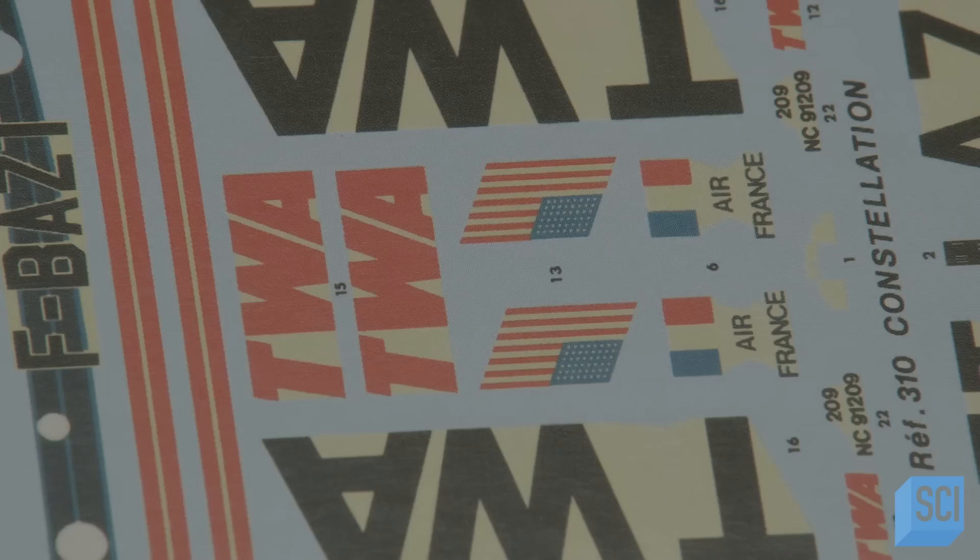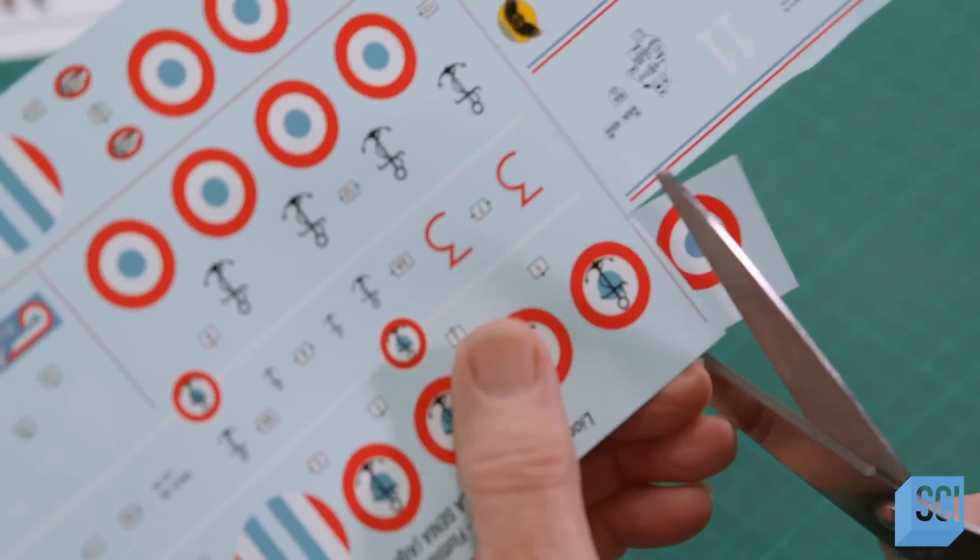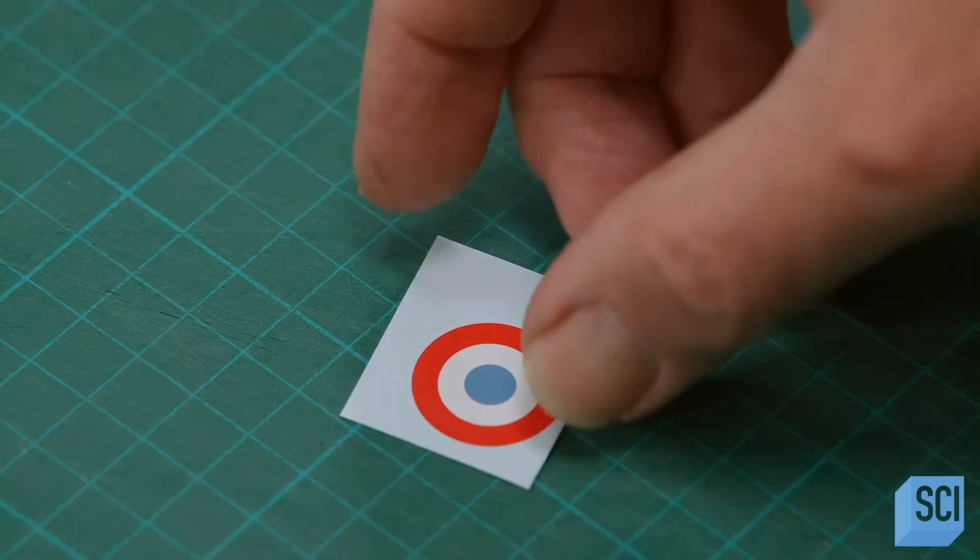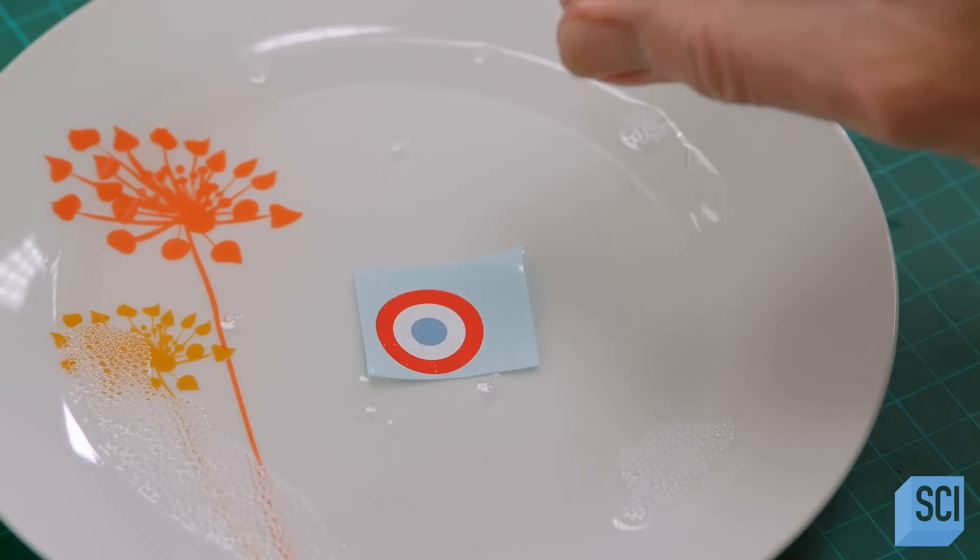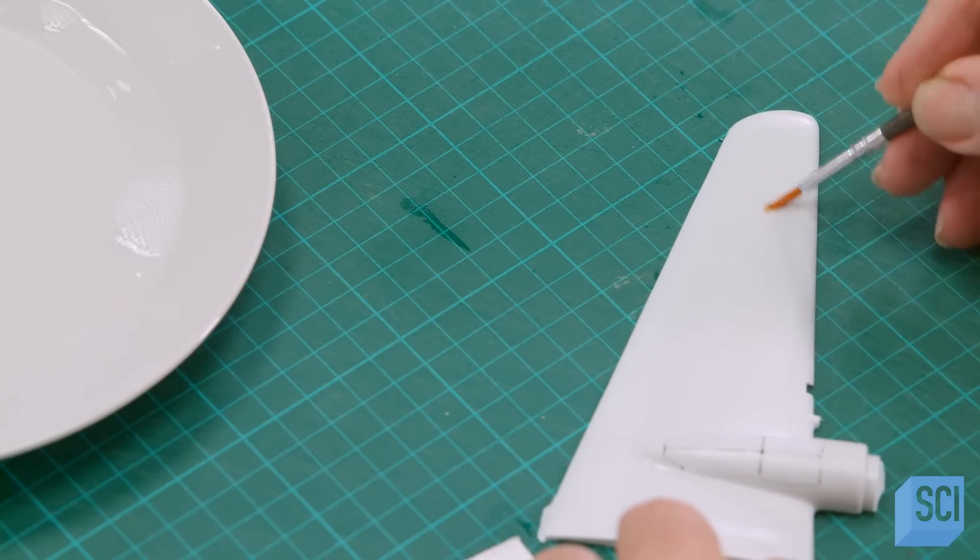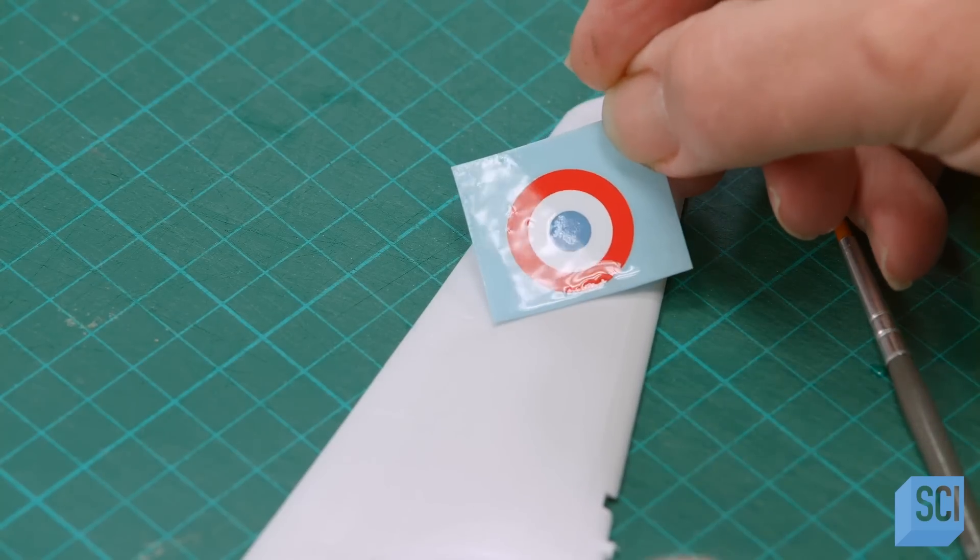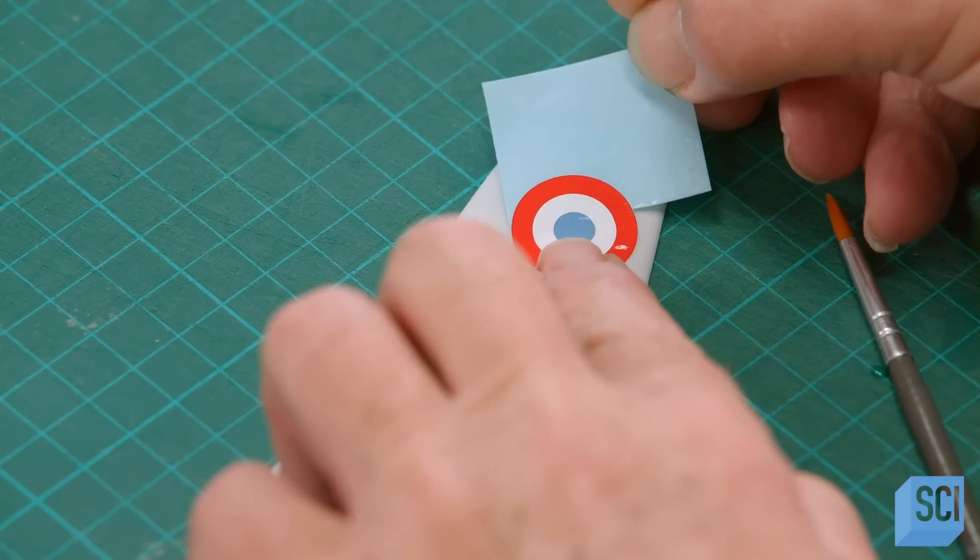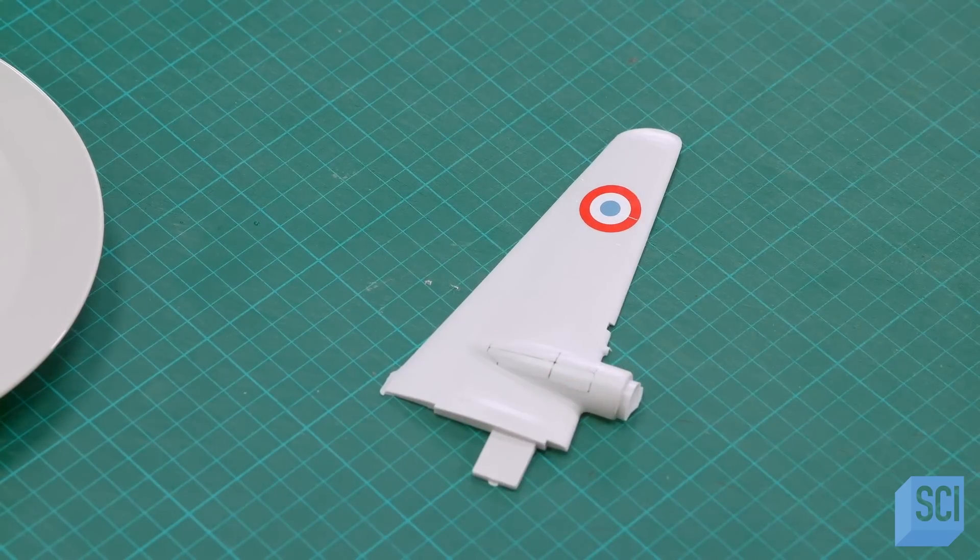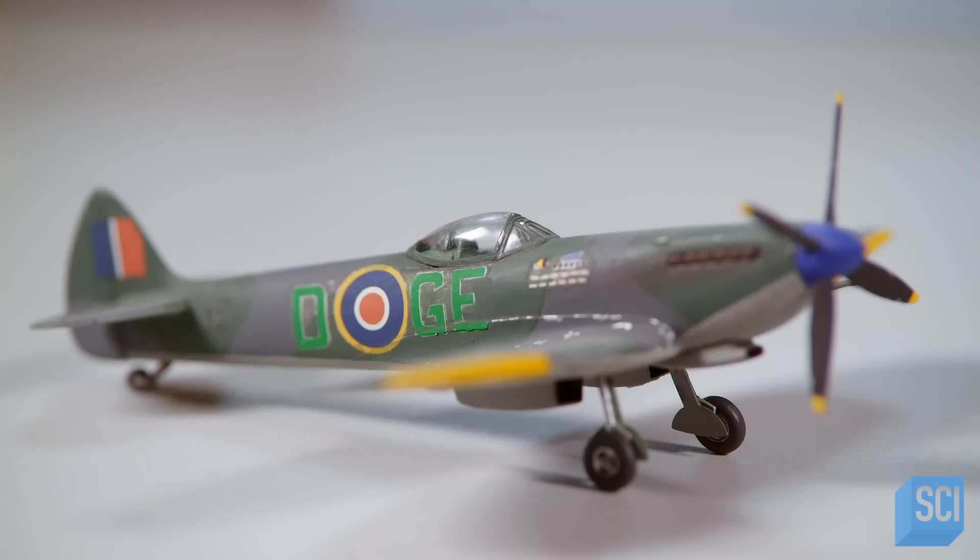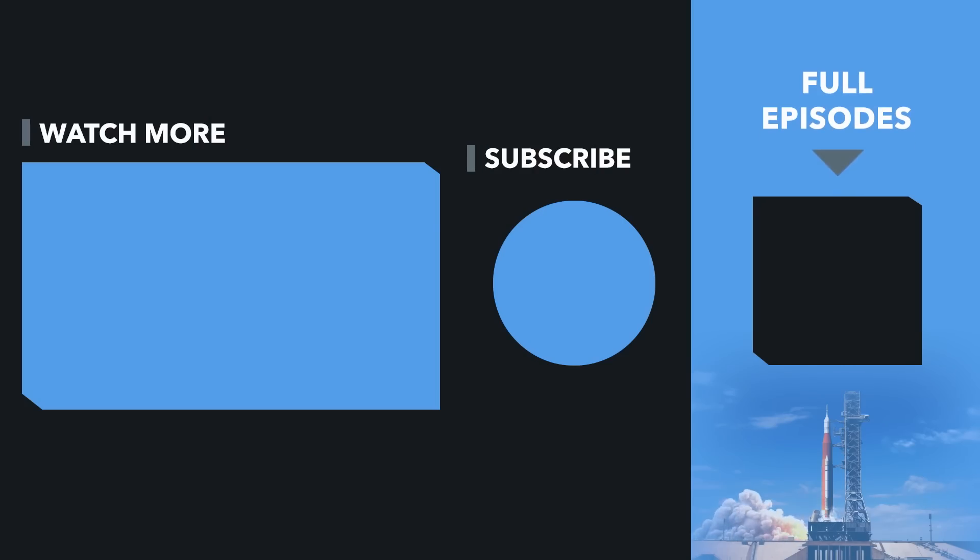Decals mimic the ID information on the outside of the original aircraft. These decals have been pre-treated with adhesive. Soaking the decals in water activates them. The assembler brushes more water onto the design spots on the model and applies the decals to the dampened spots. As the glue dries, they adhere to each other. The plastic models can also be painted before the decals are applied for a refined and clean look that really comes together.